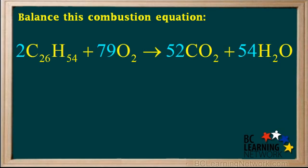Now we will do a quick count of atoms to make sure this equation is balanced. We have 26 times 2, or 52 carbon atoms on the left. And 1 times 52 equals 52 carbon atoms on the right. So carbons are balanced.